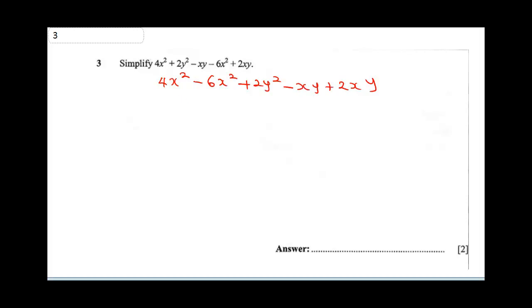4x² - 6x² will give us -2x² plus 2y². Then -xy + 2xy will give us +xy. So from here, let's bring out 2y² first: 2y² - 2x² + xy.